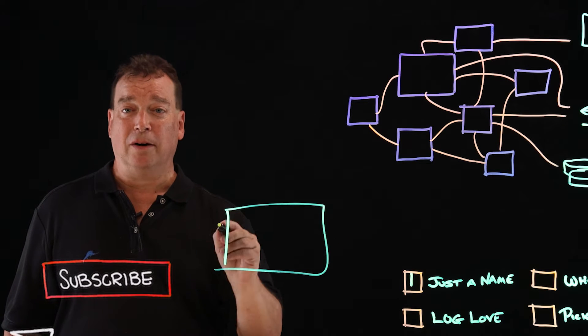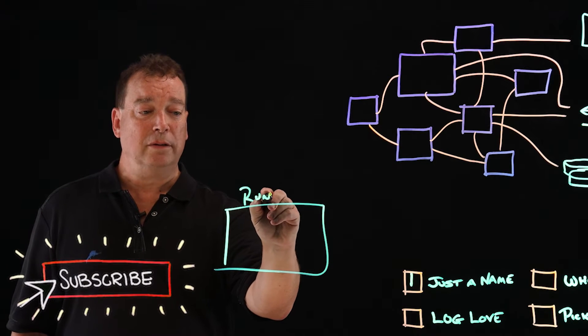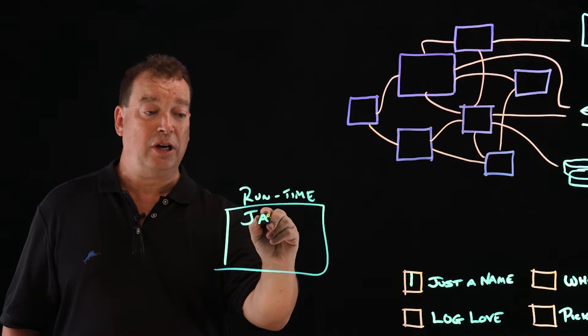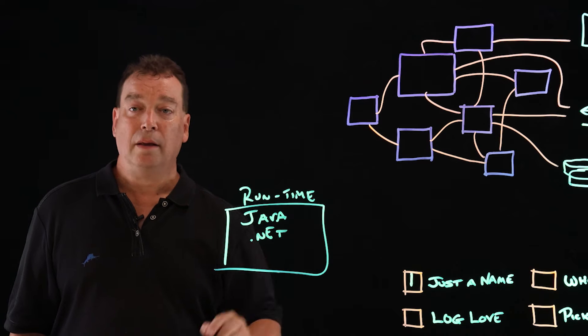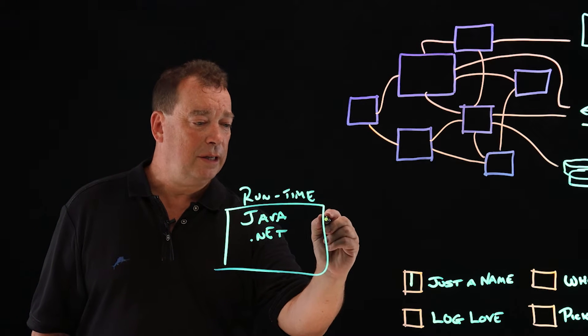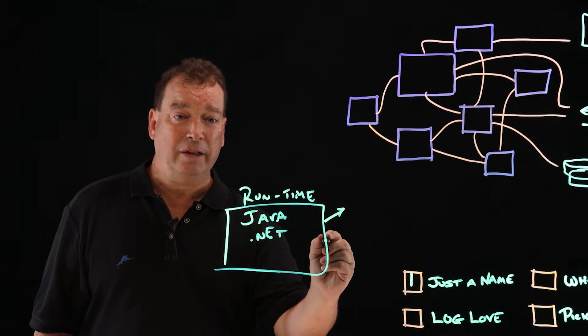Application performance monitoring, or APM, was built around the concept of seeing inside runtimes. Things like Java or .NET.